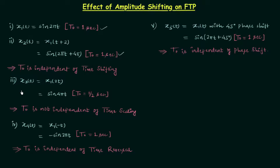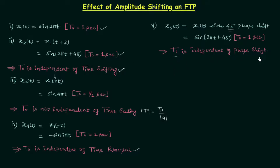Then we performed time scaling and found the fundamental time period is not independent of time scaling. The new fundamental time period is simply equal to T0 — the fundamental time period of the original signal — over mod(a), where mod(a) is the amount by which you are performing the time scaling. Then we performed time reversal and found T0 is independent of time reversal. So T0 is independent of time shifting and time reversal, but not independent of time scaling. Then we performed a phase shift of 45 degrees and found T0 is independent of phase shift as well.